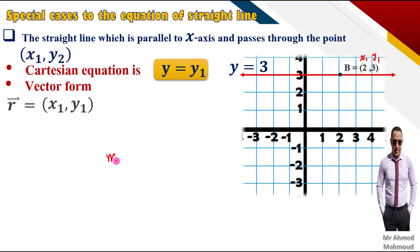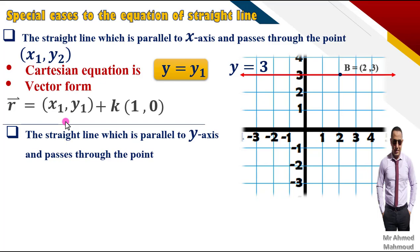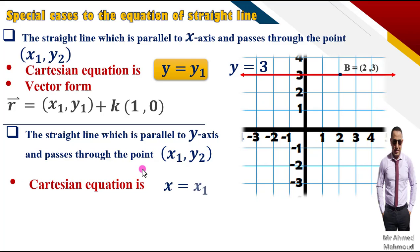نحن عارفين إن الميم هنا بيكون أكوال صفر، فأحنا هنعتبره zero. فيبقى في الحالة دي y هتكون أكوال zero. الكارتيزيان هتكون: x1 أر أكوال x1, y1 بلس k في zero. وبالنسبة للحالة التانية، لو باسز روزا x1, y1 هتكون x = x1.